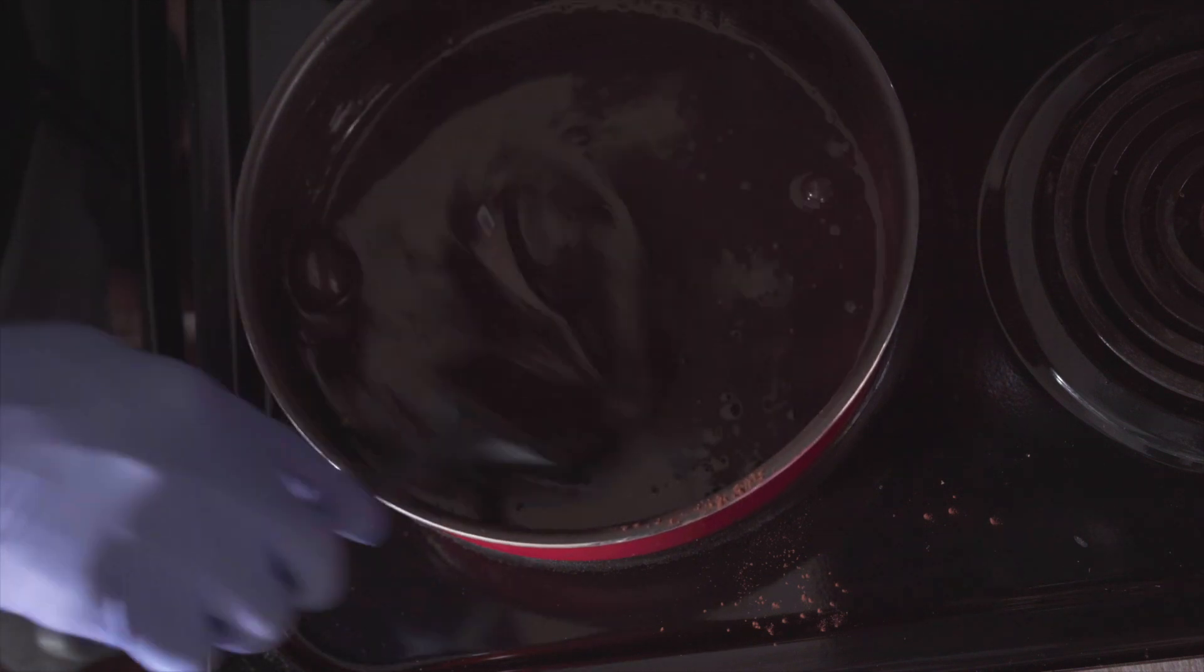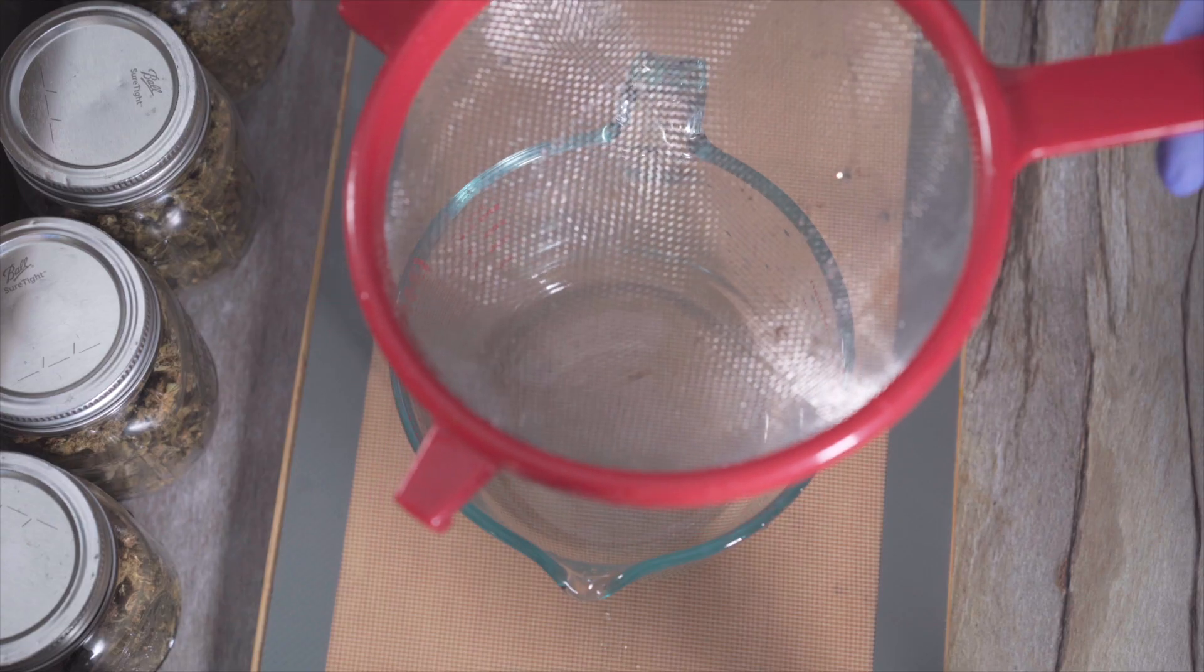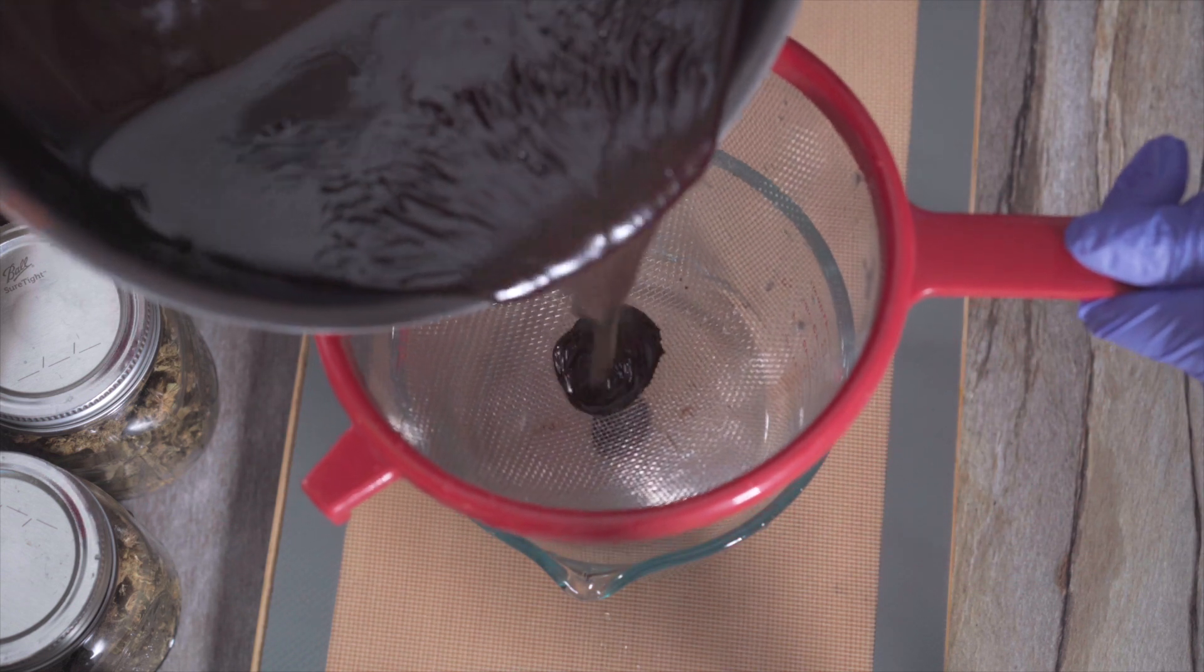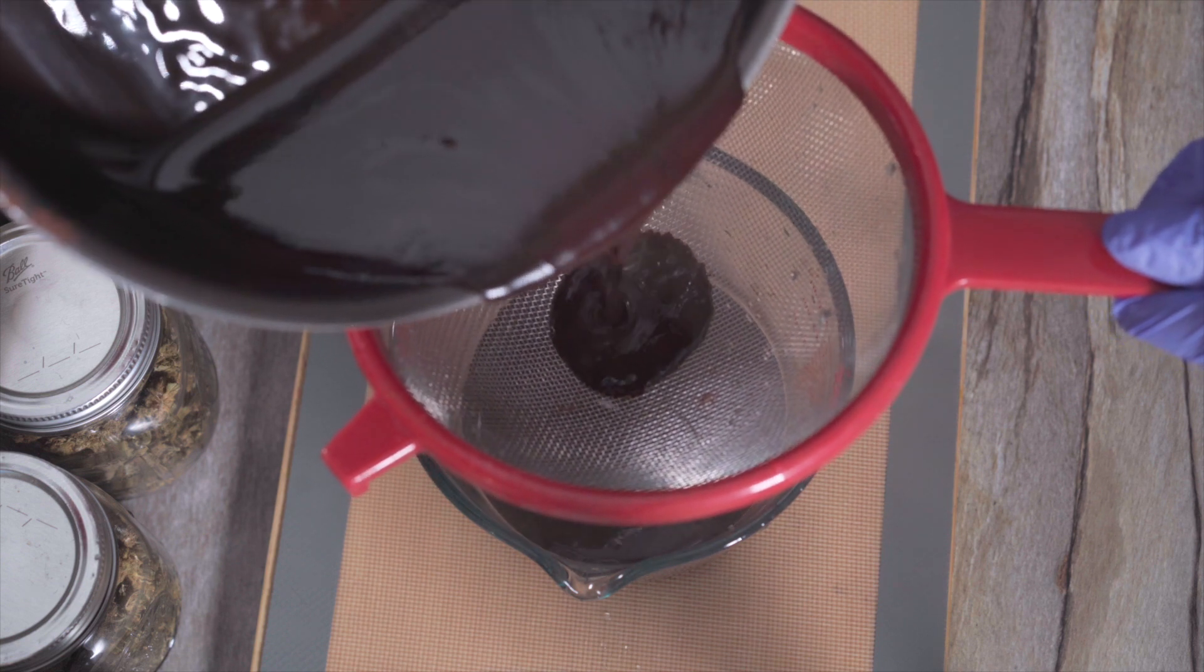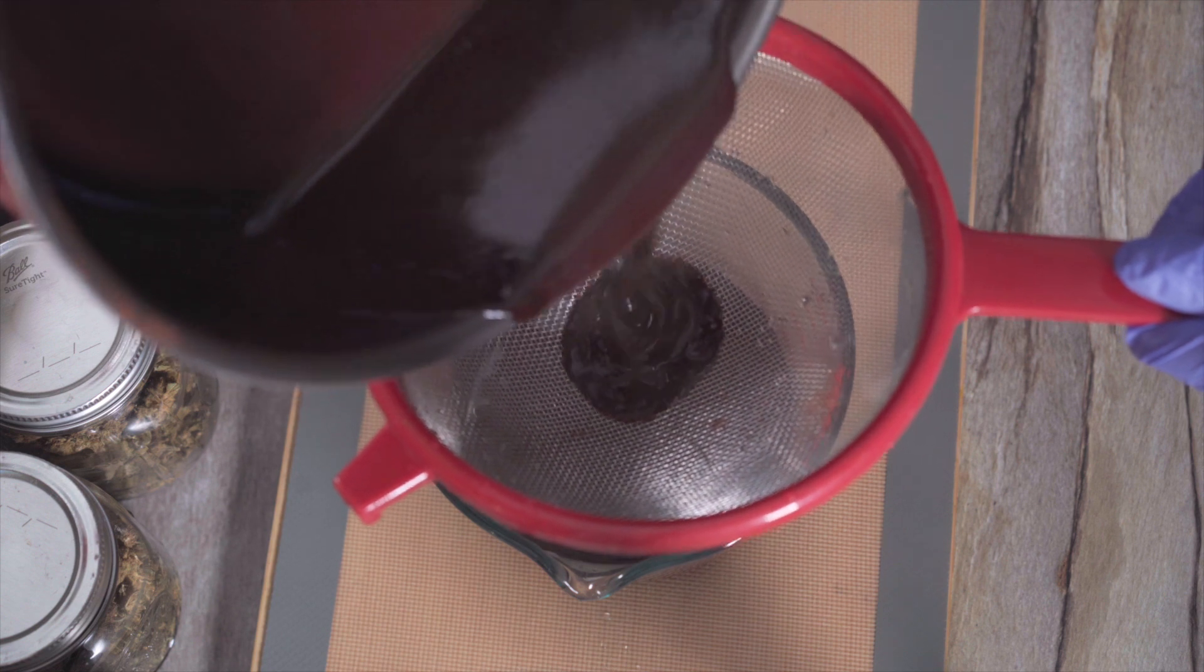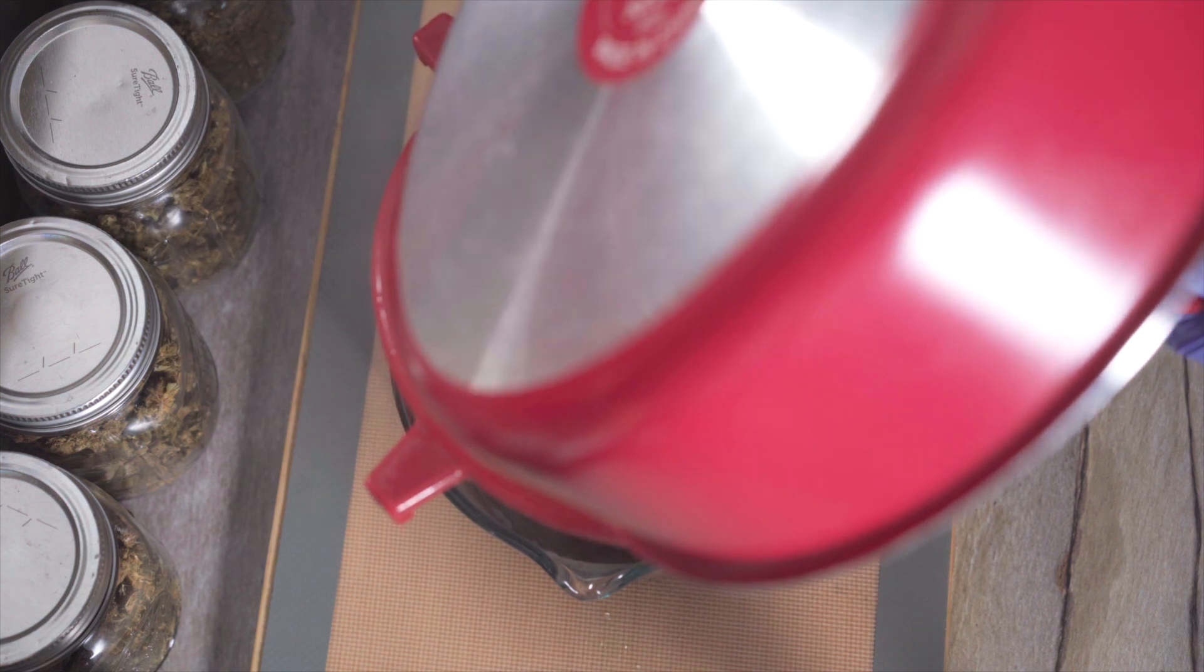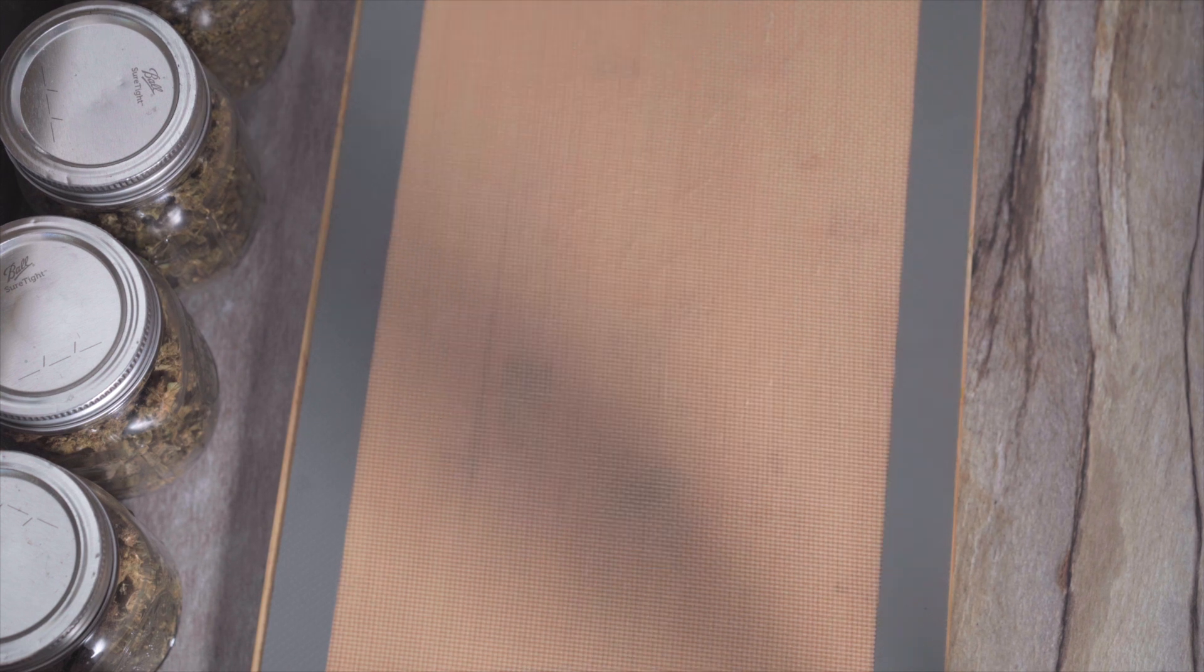So remember, I used milk which has got a lot of fat in it, so this should be really, really potent. So now we're going to use the mesh screen to filter out the chocolate. Now we're going to add it to a mason jar.